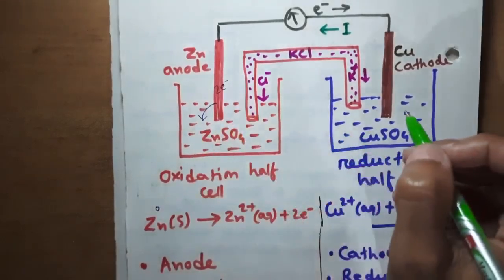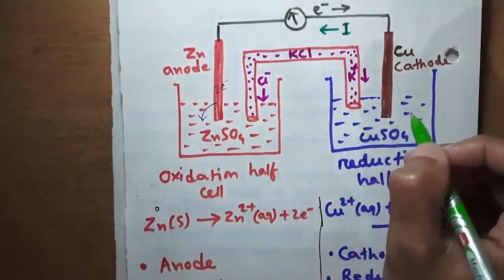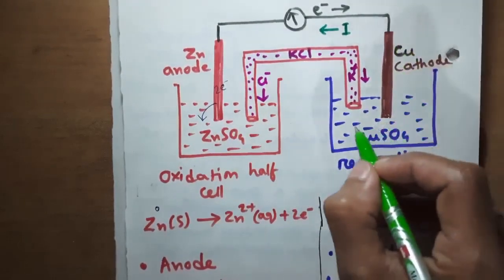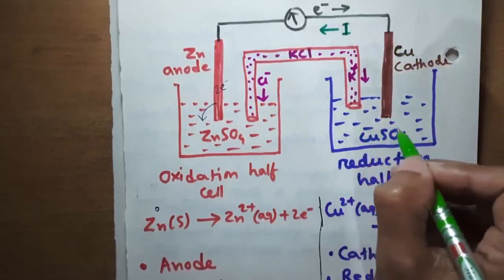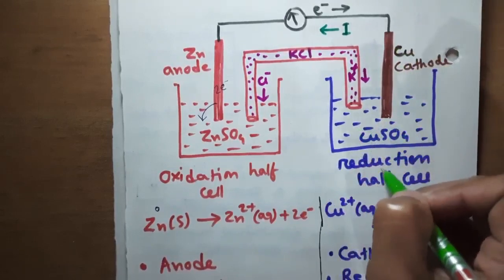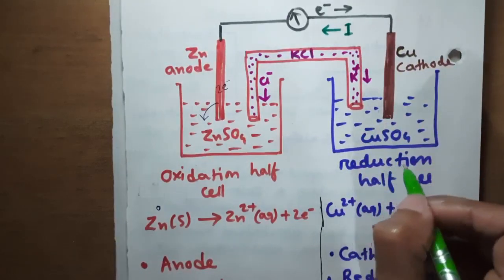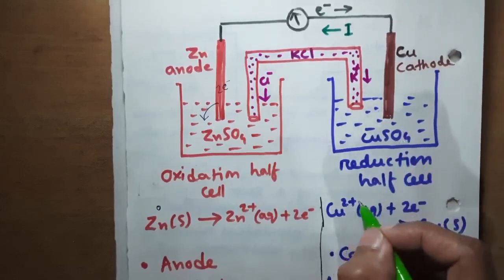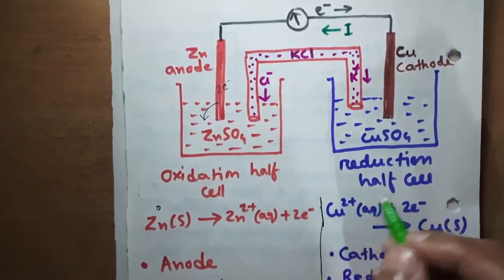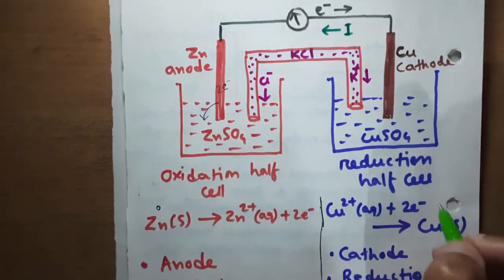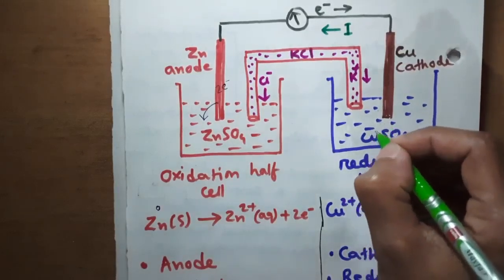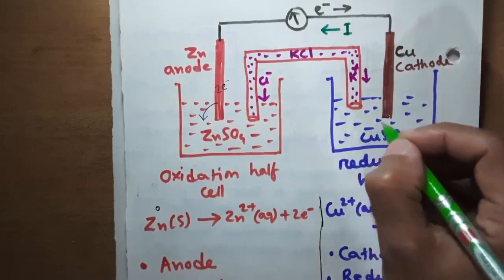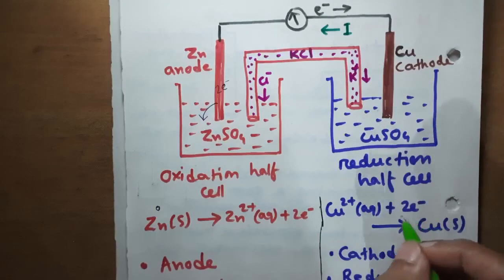Similarly, in the reduction half cell, we have a copper electrode and copper sulfate solution. Since it is a reduction half cell, copper 2 plus ions will undergo reduction to copper. That means the copper 2 plus ions present in the solution will convert to solid copper by taking 2 electrons.